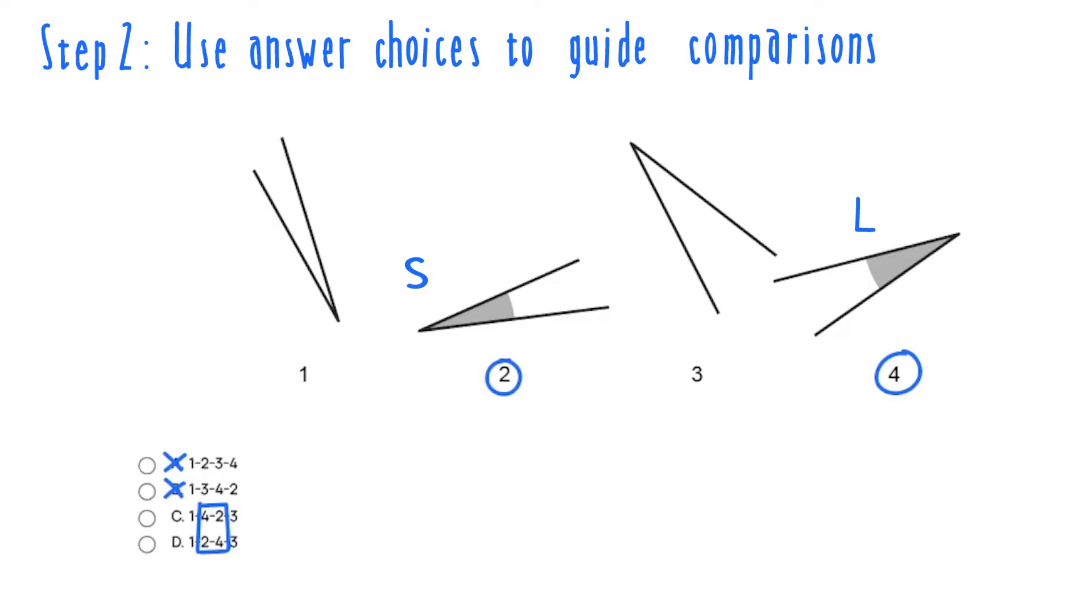That means we're able to eliminate choice C, making choice D our correct answer. Are we kind of getting the hang of it? Let's try another.